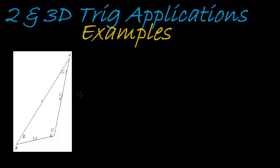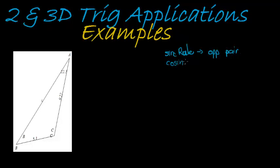Here again we have another example trying to solve one of the unknowns in a triangle, which is simply called solving a triangle. Remember, to use the sine rule we need an opposite pair. If we don't have an opposite pair, or can't find one easily, then we will use the cosine rule. Here we can see we have an angle, and the question is: can we find its opposite side, or do we have it? And we do.